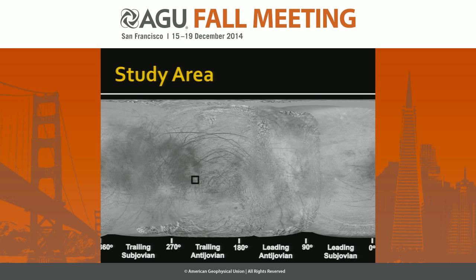This is our study area on the global map of Europa. It's in the trailing Antijovian Quadrant. An important thing to take away is that we are in an area where we have a big chaos region, and then a transition to a ridged plains region — you may have heard this called the wedges region.